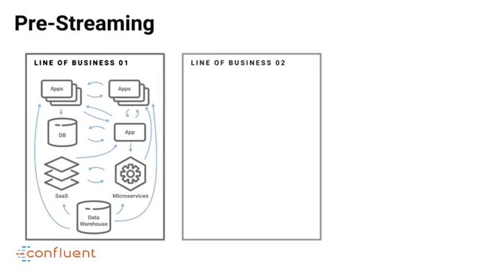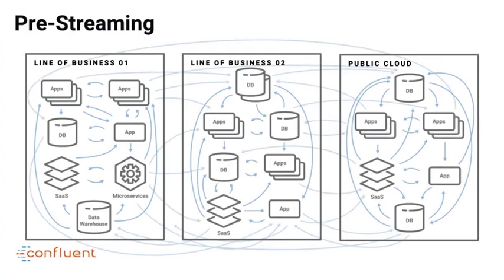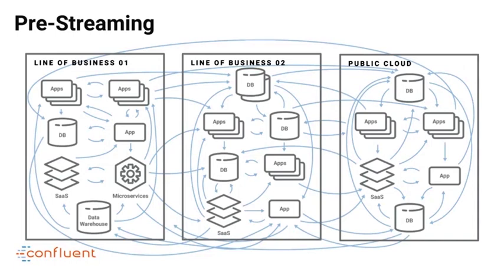To understand why there's so much momentum around this new category, let's look at the pre-streaming world. The pre-streaming world is complex. Data is stuck in legacy systems and various silos. There are lots of point-to-point connections, making your data architecture brittle and lossy. Data moves around in bespoke batches and is processed in a batch fashion. All focus and time is spent worrying about how to land data in all the right places, taking focus away from building responsive, event-driven applications.